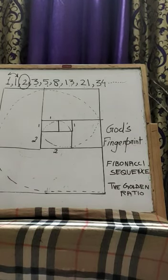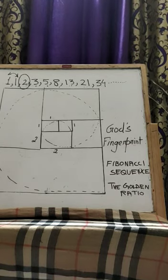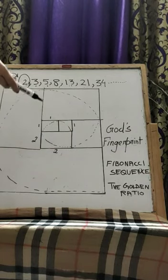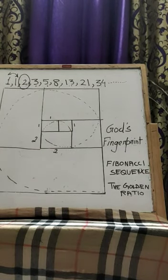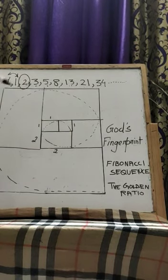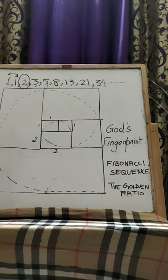So if you look at this particular golden rectangle, it can be broken down into smaller squares which has the Fibonacci numbers, whether it's 1 or 2 or 3 or 5 or 8.